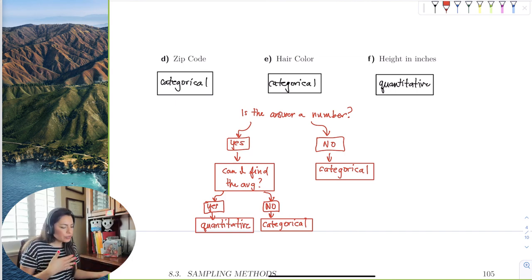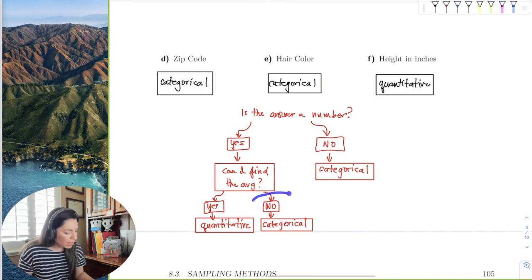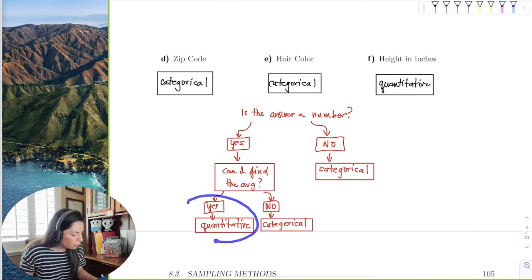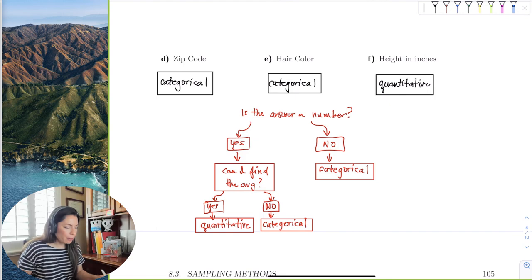But if you say yes, the answer is a number, then you ask yourself, can I find the average? Can I find the average zip code? No. Well, if you can't, if it has no meaning, then it's categorical. If you say, yes, I can find the average temperature, the average height, then you know it's quantitative. But hopefully this little tiny flowchart helps a little.